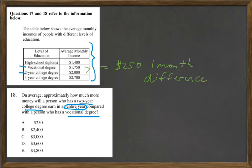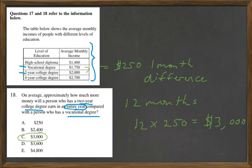So then I'm thinking, how many months are in a year? There are 12 months. So I have to take 12 times 250, and that equals 3,000. My answer is C.